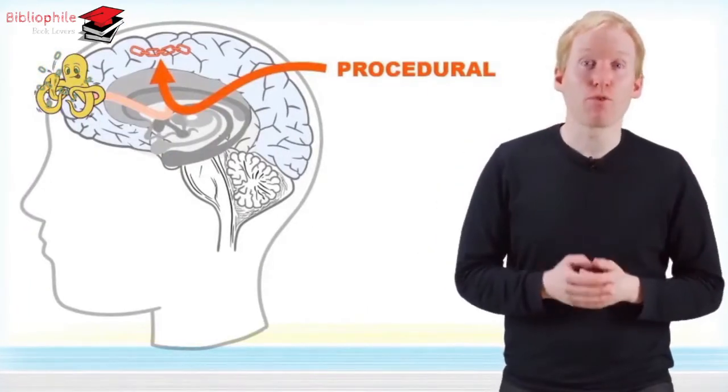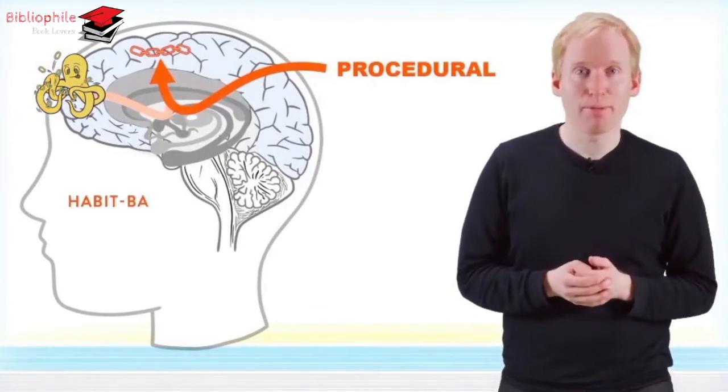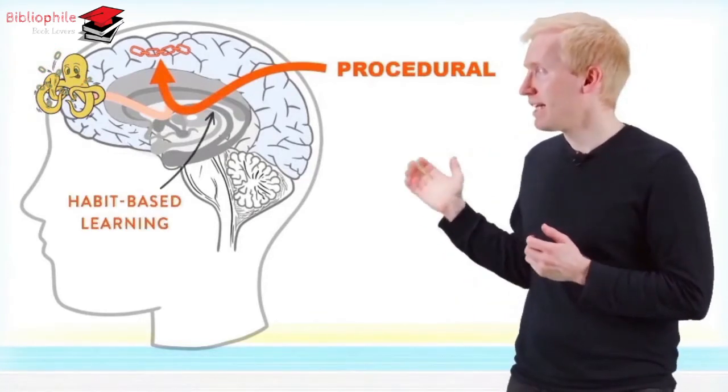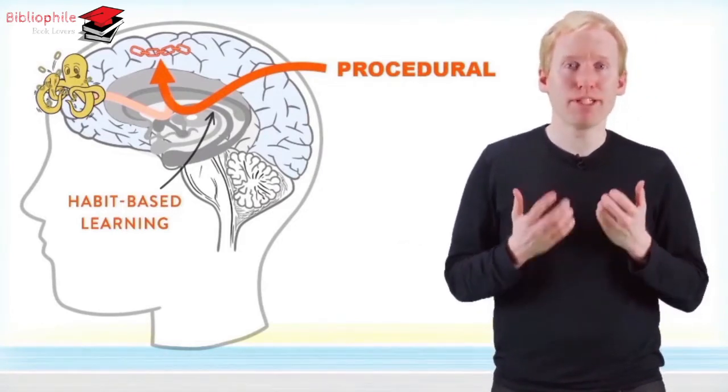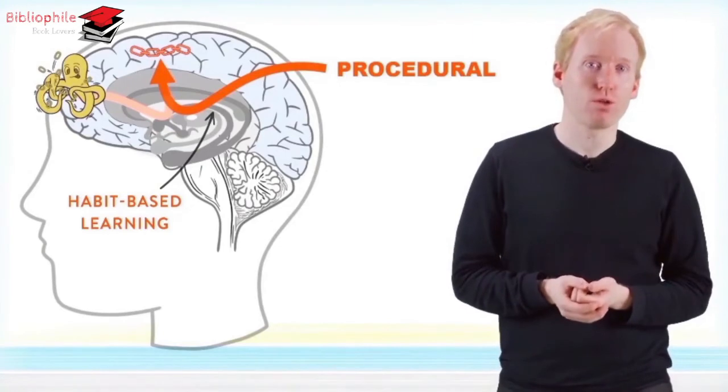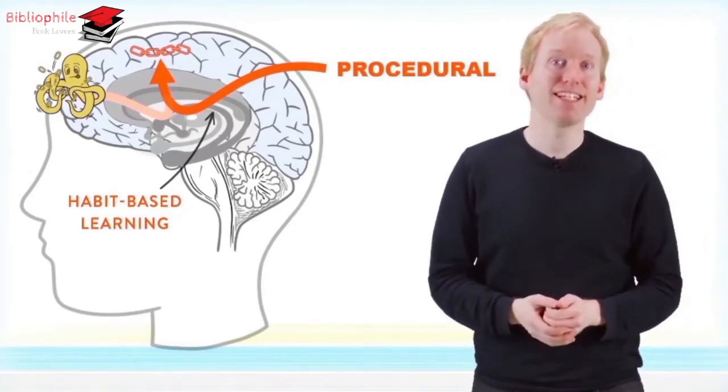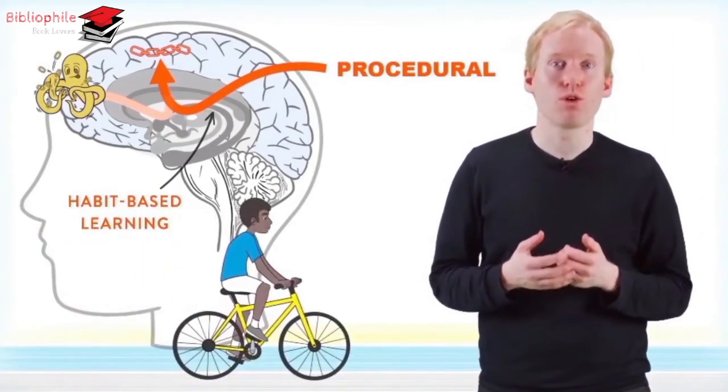The other stream of your procedural system involves the habit system. This stream is what you use when you're learning a habit, like the route you habitually use to drive a car or bike to work. In fact, it's the same system you use to learn to ride a bike.